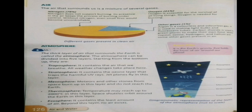Other gases in the 1 percent include ozone, hydrogen, helium, etc. Argon gas is used in making light bulbs and tube lights, and carbon dioxide is used by green plants to make their own food. Our next topic is the atmosphere — the thick layer of air that surrounds the earth is called the atmosphere.